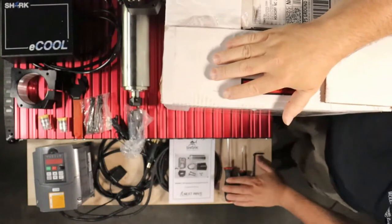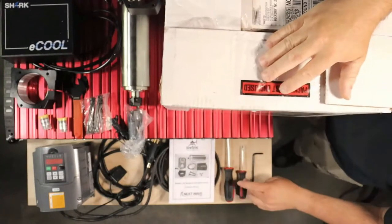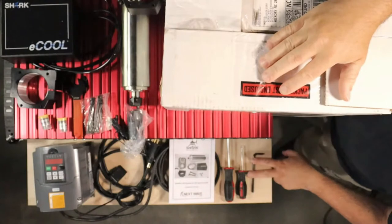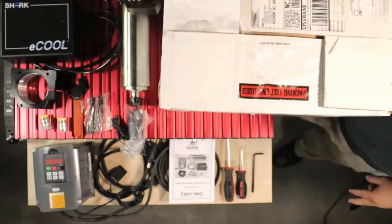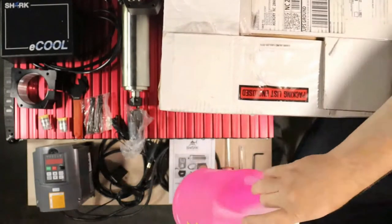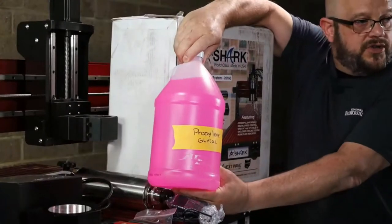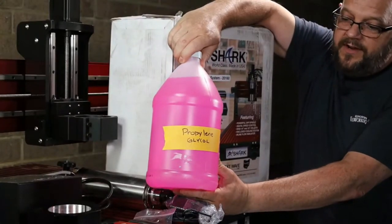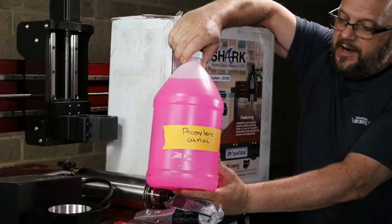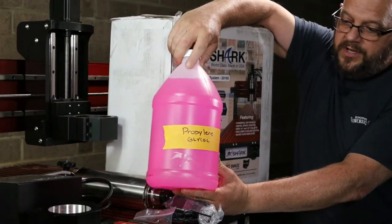There are some tools you're going to need. You will need a Phillips, a flathead, and a number five or five millimeter Allen wrench. Something you'll have to probably go out and purchase is the propylene glycol. You will need to pick this up. This can be found at most of your auto parts stores without any problems. But you will need the propylene glycol.